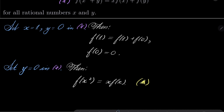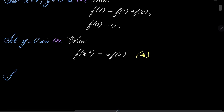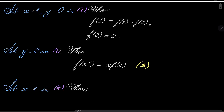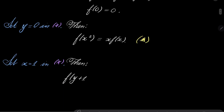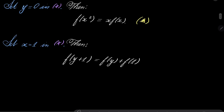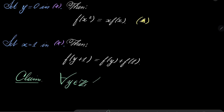Now let's set x to be equal to 1 in asterisk once again. Then, if I set x to be 1, I have f of y plus 1 equals f of 1 plus f of y. And now my claim, which is easy to prove by induction: for every integer y, f of y equals y times f of 1.